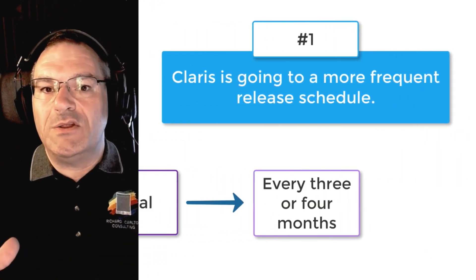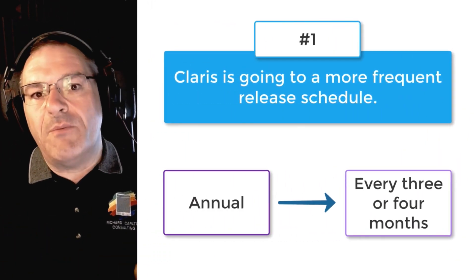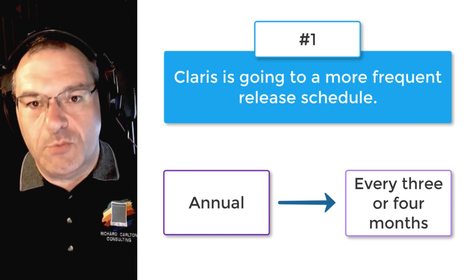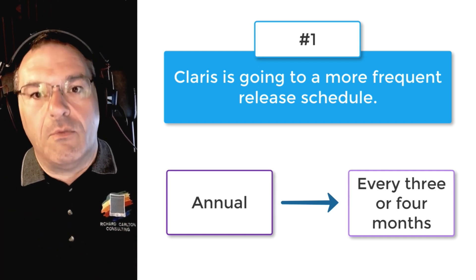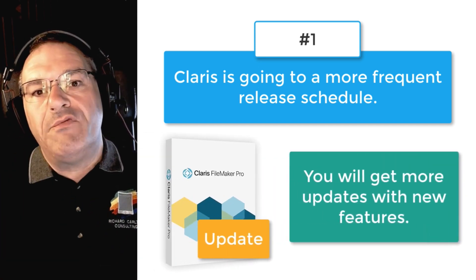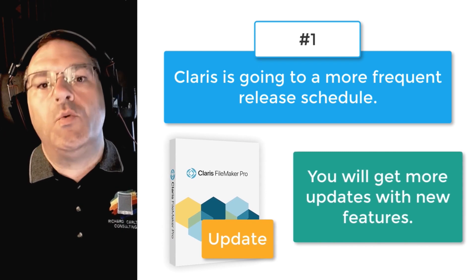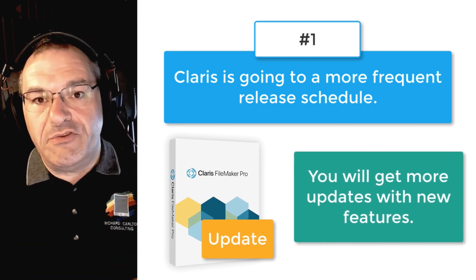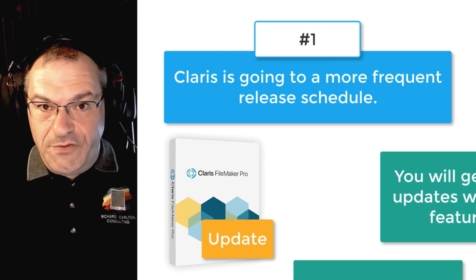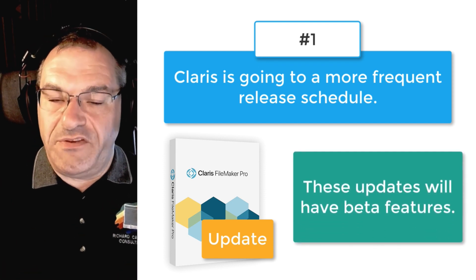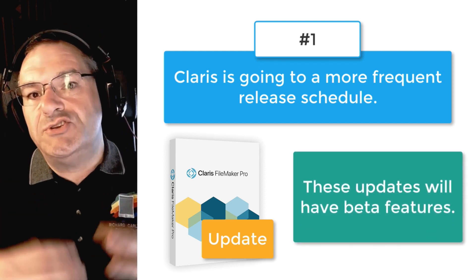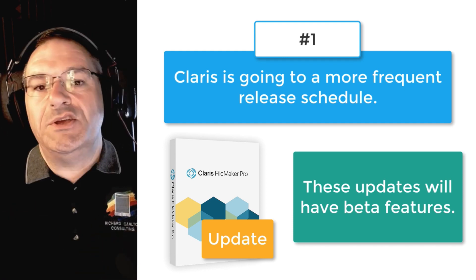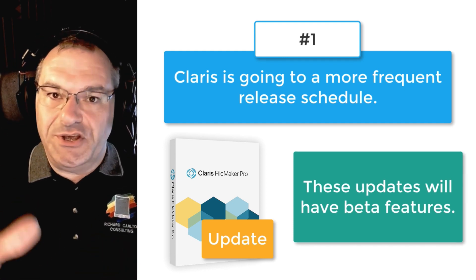Number one on our list is that Claris is switching from an annual release cycle to a more frequent release cycle — say every three or four months — which means you'll be getting more frequent updates with new features. That also means you're going to start to see features that Claris calls 'preview,' which are essentially beta features you should try out and provide feedback for, but shouldn't use in a production environment just yet.